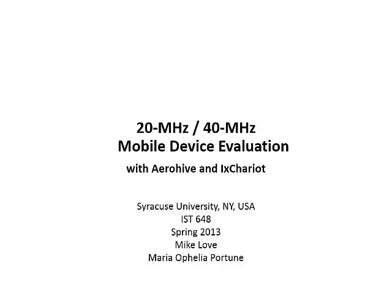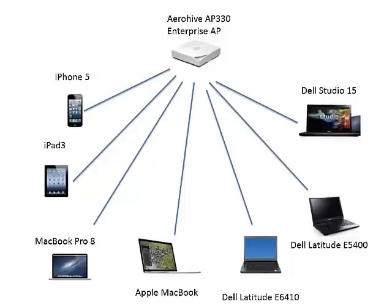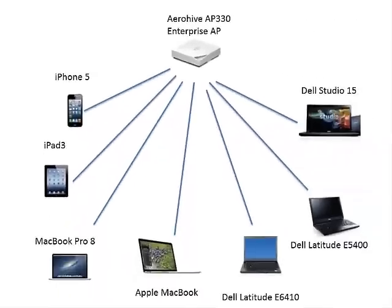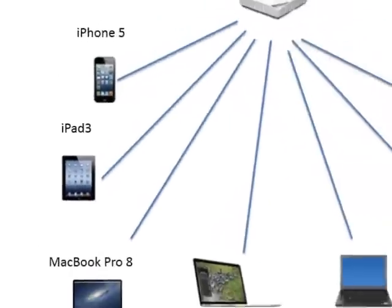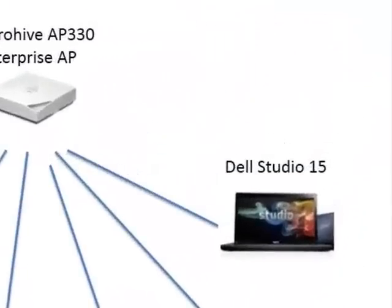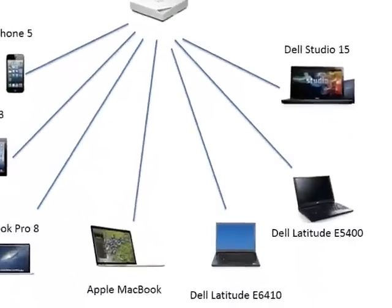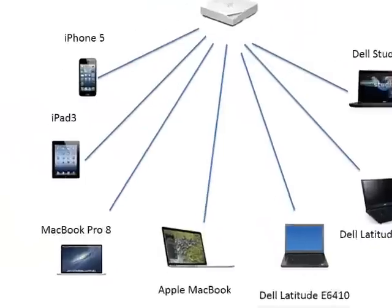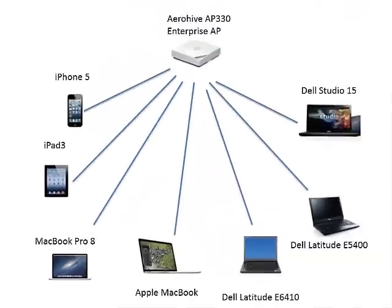Hello everyone. Mike and I would like to show you how mobile devices performed in the 20 MHz and 40 MHz channels. We evaluated a number of different mobile electronic devices that operate in the Wi-Fi 5 GHz frequency band. On the first day of testing, the devices we used included an iPhone 5, an iPad 3, an Apple MacBook, a Dell Studio 15, a Dell Latitude E5400, and a Dell Latitude E6410. On the second day of testing, we used an Apple MacBook Pro instead of an iPhone 5.